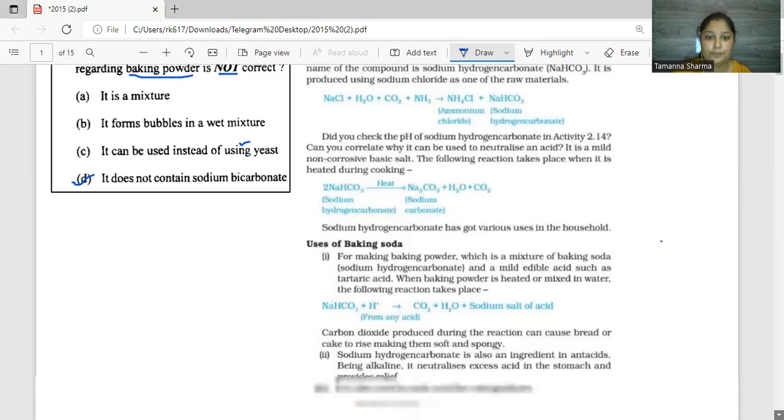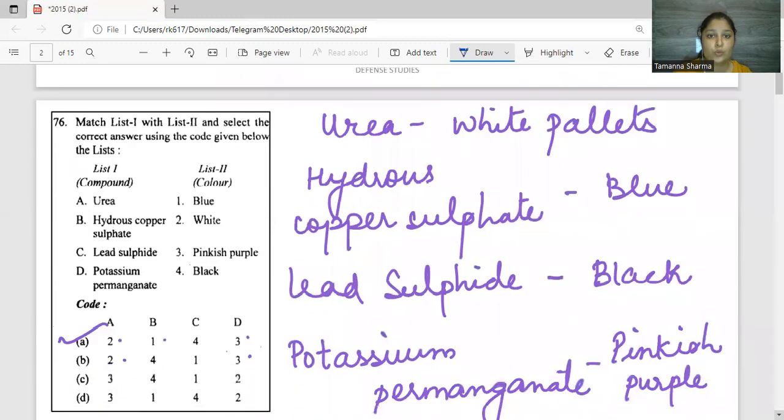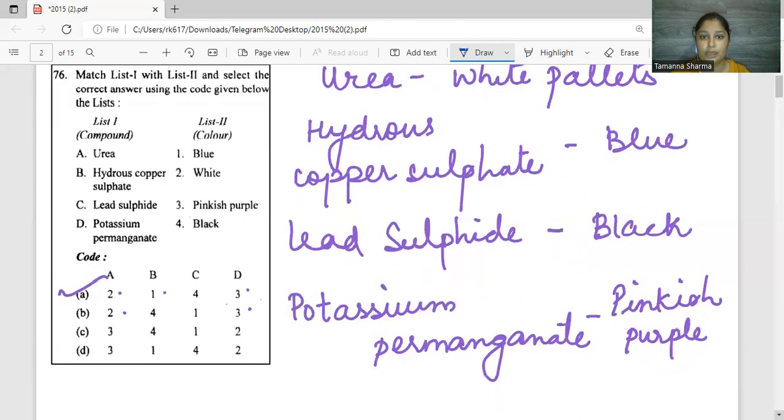Next question: match list one with list two and select the correct answer using the code given below. You have to match compounds and colors. Copper sulfate is a classic color, it is blue. Potassium permanganate is pink. Urea is white in color, and lead sulfide is black in color. So the answer will be accordingly A.